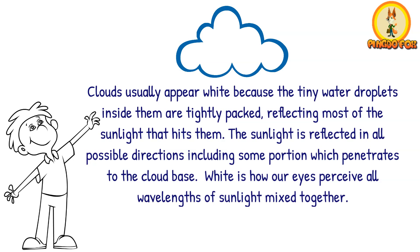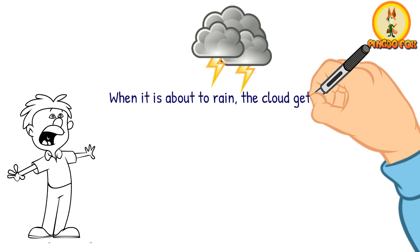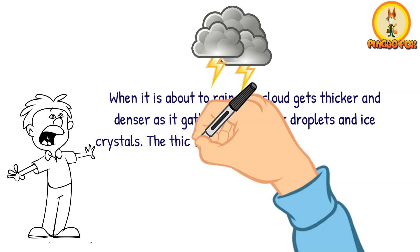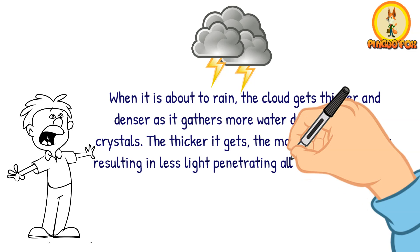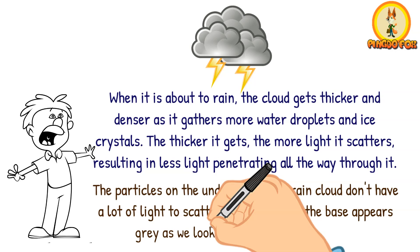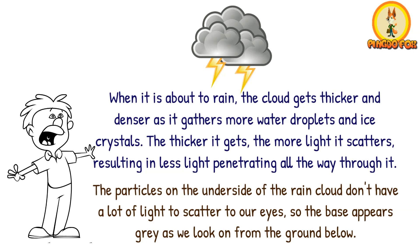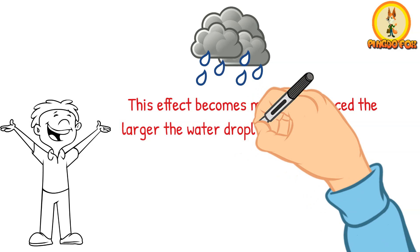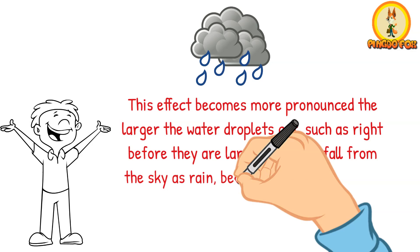When it is about to rain, the cloud gets thicker and denser as it gathers more water droplets and ice crystals. The thicker it gets, the more light it scatters, resulting in less light penetrating all the way through it. The particles on the underside of the rain cloud don't have a lot of light to scatter to our eyes, so the base appears grey as we look on from the ground below. This effect becomes more pronounced the larger the water droplets get, such as right before they are large enough to fall from the sky as rain, because they become more efficient at absorbing light rather than scattering it.